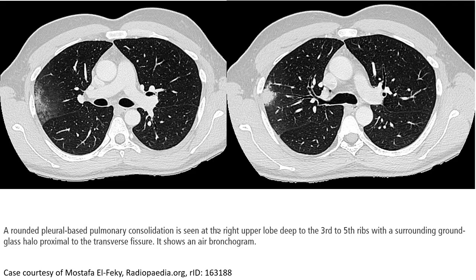We can also find a pneumonia pattern that looks round, with a boundary consolidation, which is seen at the right upper lobe, deep to the third to fourth rib level. It is surrounded by ground glass halo and is proximal to the transverse fissure. It also has an air bronchogram.